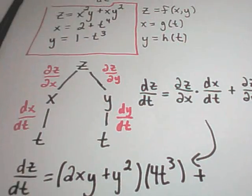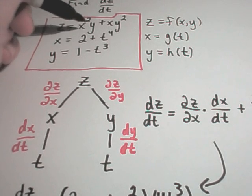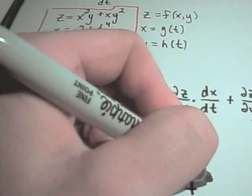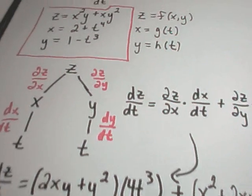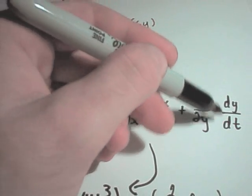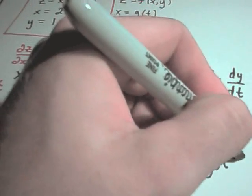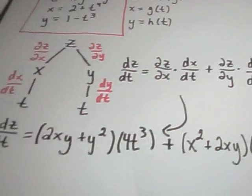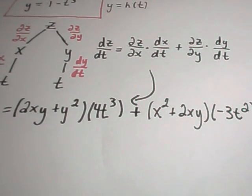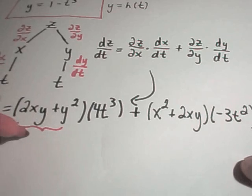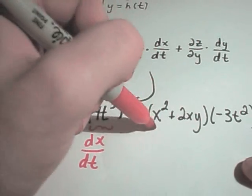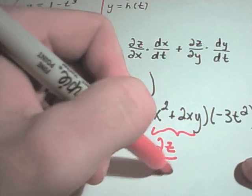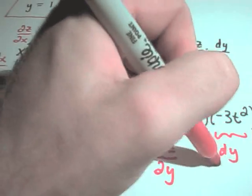Then I add onto that the partial of z with respect to y — now treating y as a variable and x as a constant — so I get x squared plus 2xy. And then the derivative of y with respect to t gives me negative 3t squared. So there is my derivative of z with respect to t. The first part is ∂z/∂x, then dx/dt, then ∂z/∂y, and finally dy/dt.